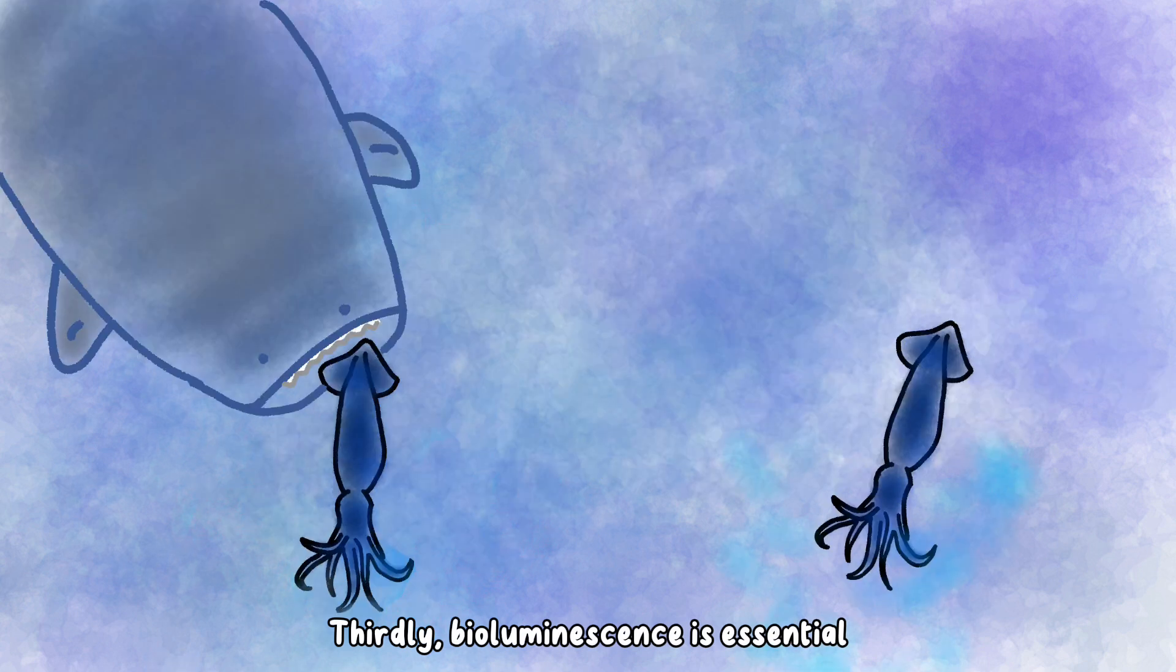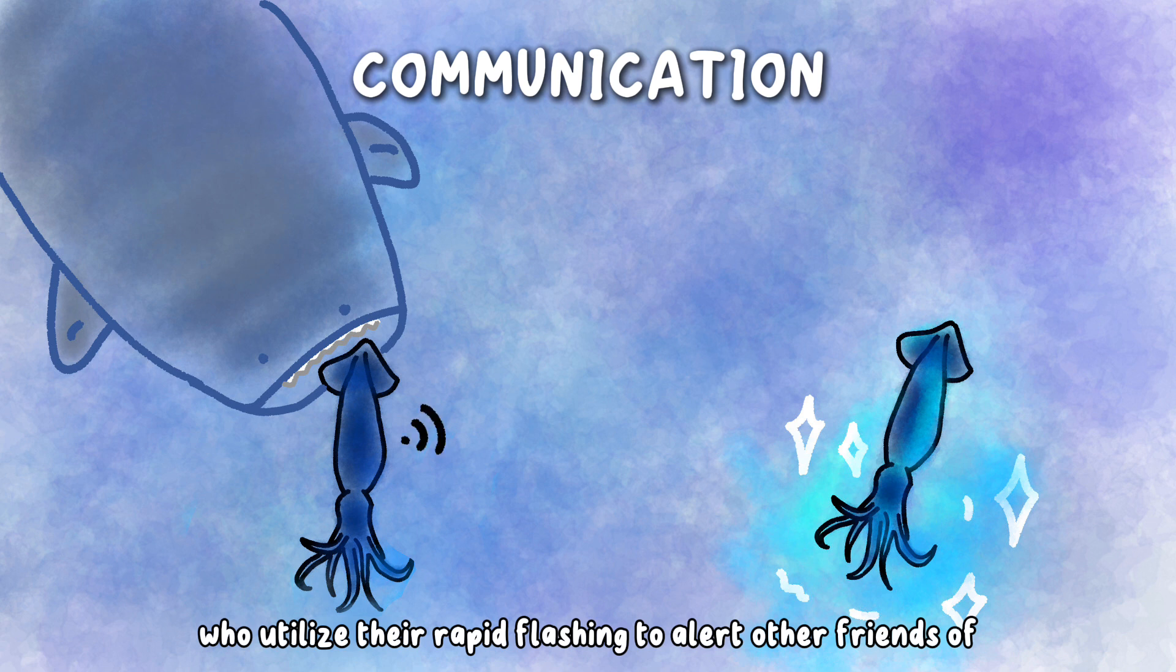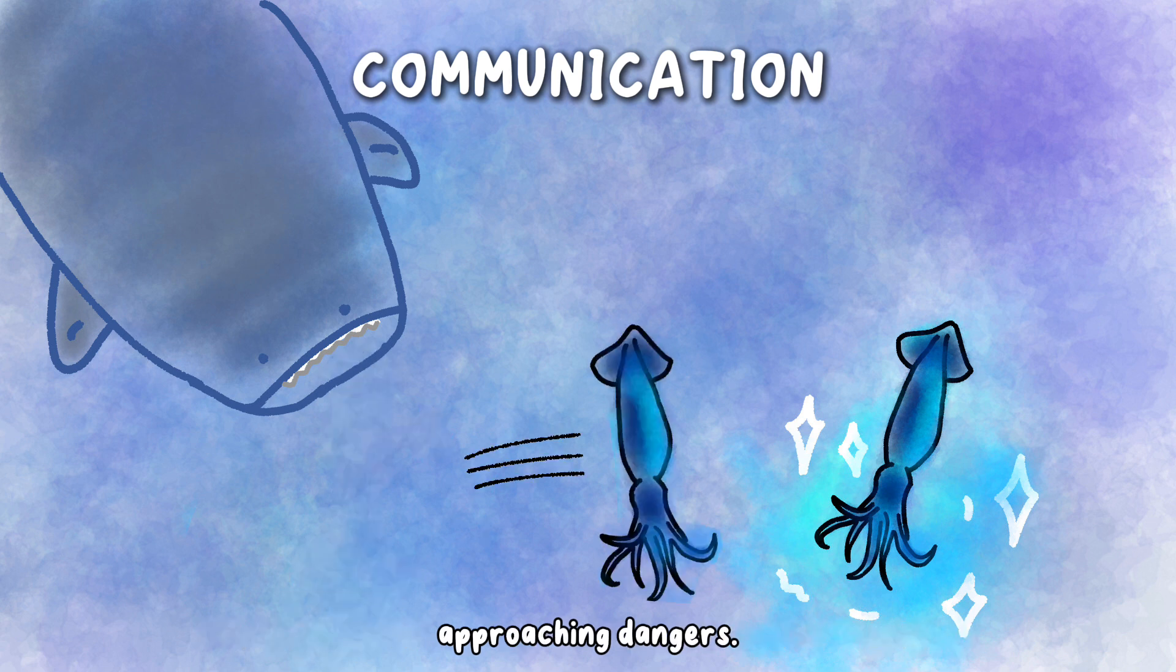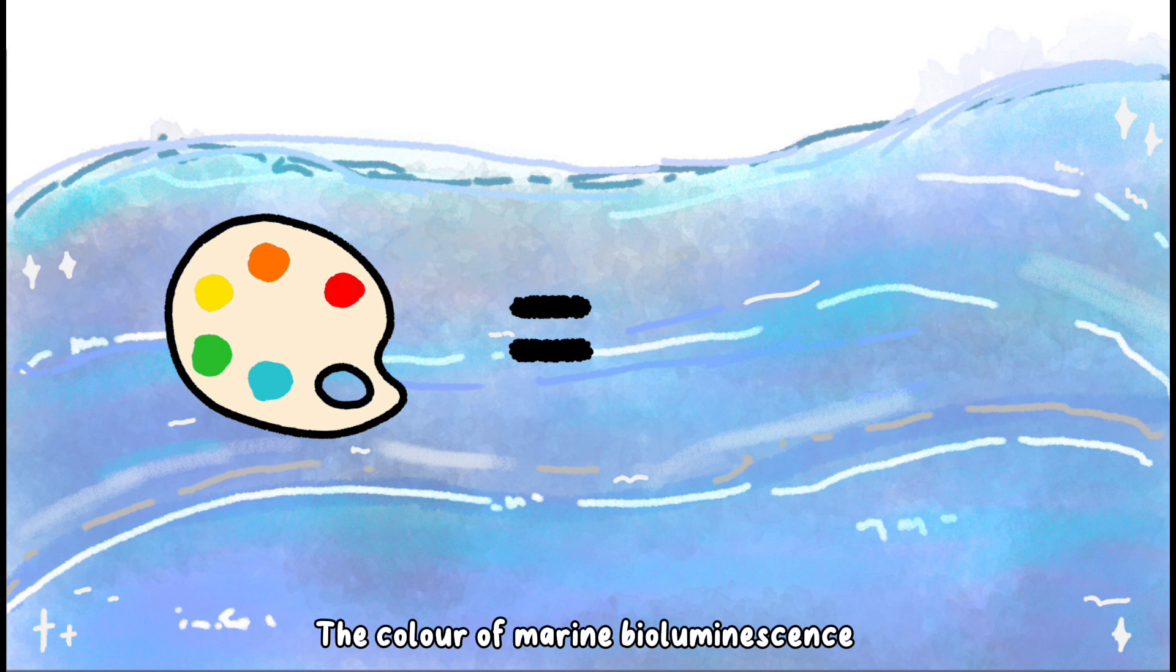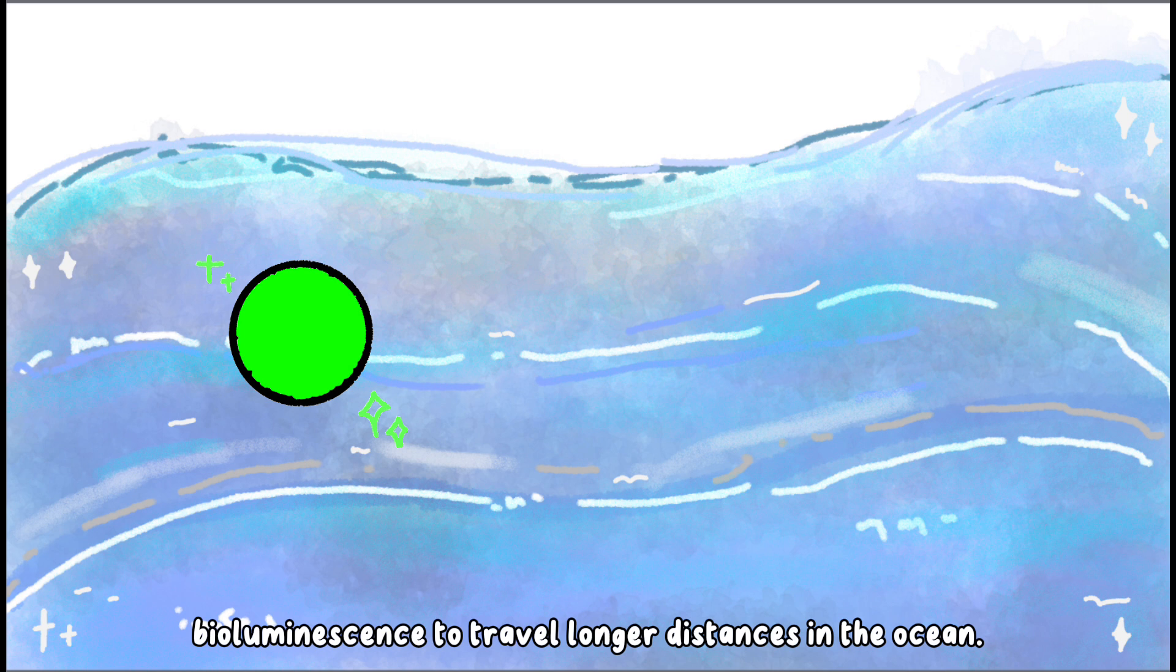Thirdly, bioluminescence is essential for communication between organisms, who utilize their rapid flashing to alert other friends of approaching dangers. The color of marine bioluminescence is usually green or greenish blue, because the short wavelengths allow bioluminescence to travel longer distances in the ocean.